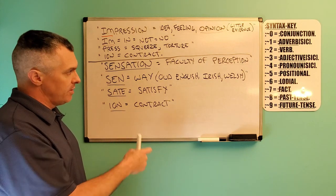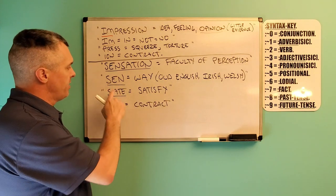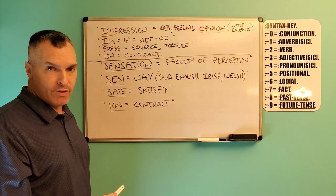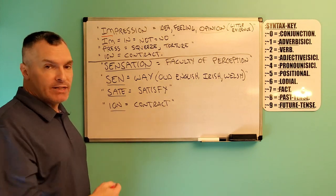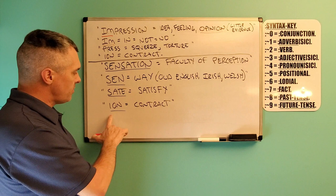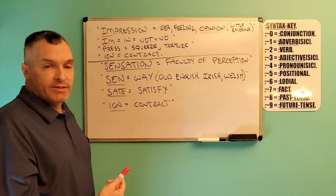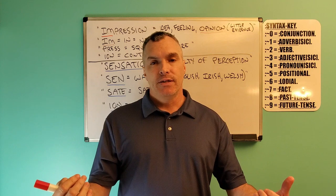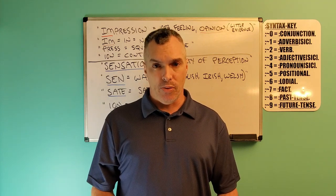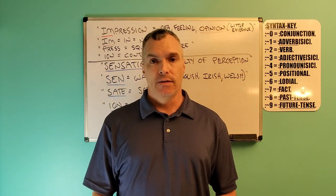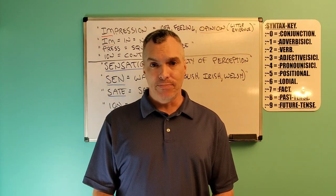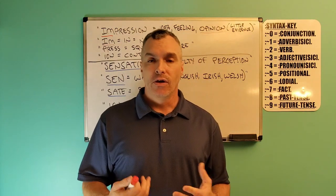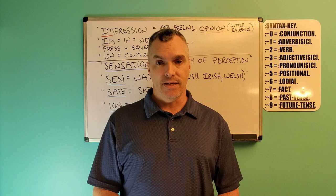Sensation, on the other hand, is a faculty of perception. SEN means 'way,' from Old English, Irish, and Welsh — the oldest nativity of that word. SATE means to satisfy, i.e., satiate. And then ION is contract. So this is basically a way to satisfy contract. When the perceptions happen, when the data comes into the port of sensation and docks at our ports of perception, we formulate knowledge and transship it out. Thus it's a way to satisfy contract — a source way. Sensation. Positive performance.